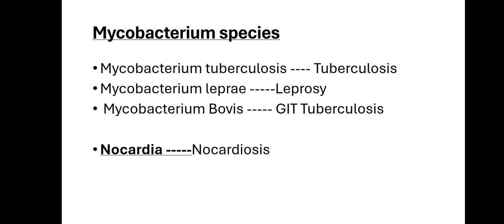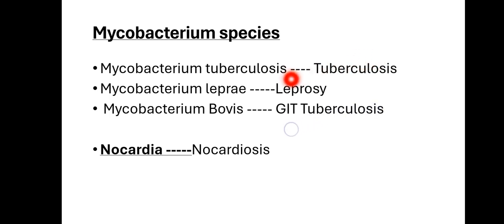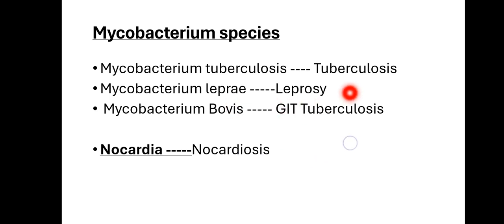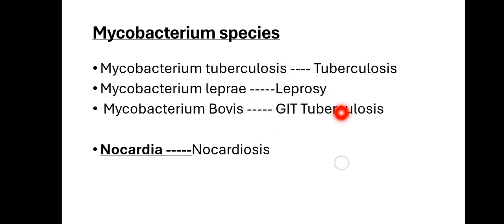The species of Mycobacterium include: Mycobacterium tuberculosis, Mycobacterium leprae, and Mycobacterium bovis. Mycobacterium tuberculosis causes tuberculosis in the lungs and bones. Mycobacterium leprae causes leprosy. Mycobacterium bovis causes tuberculosis in the GIT. TB has many types — in lungs and bones it is caused by M. tuberculosis, and in the GIT it is caused by M. bovis.